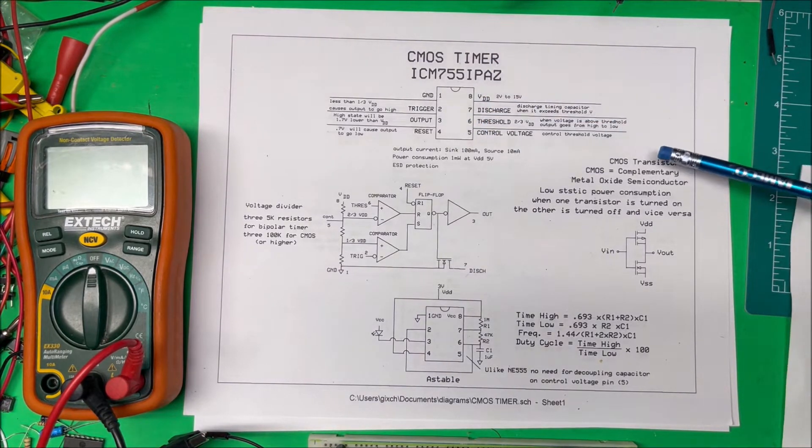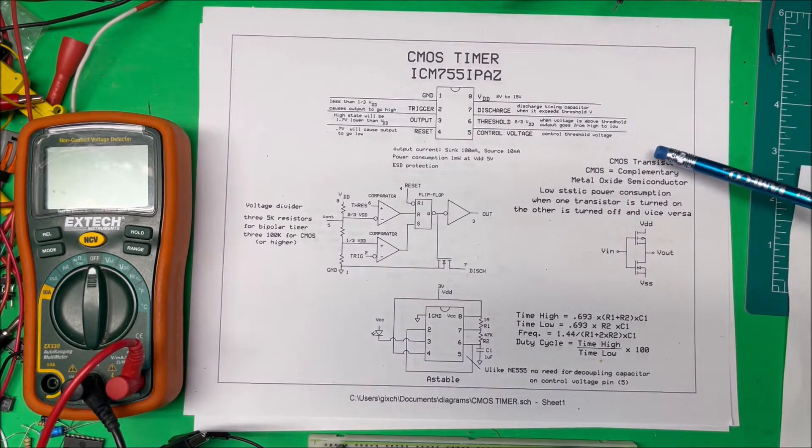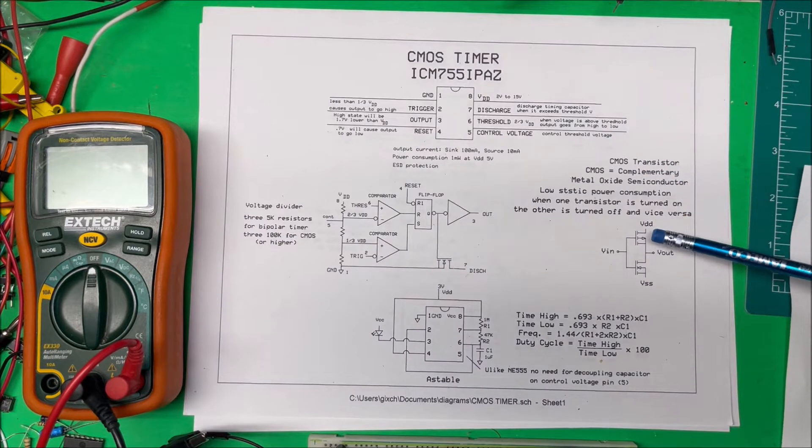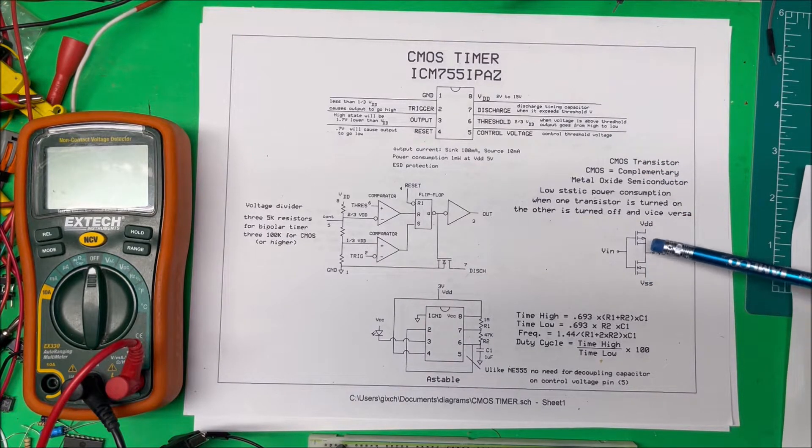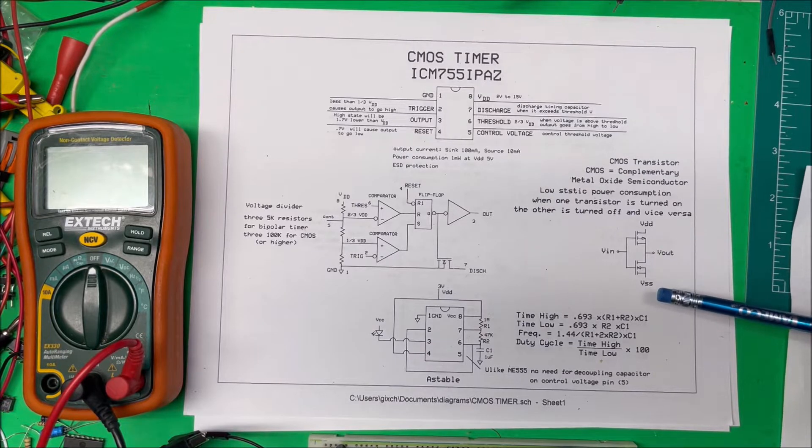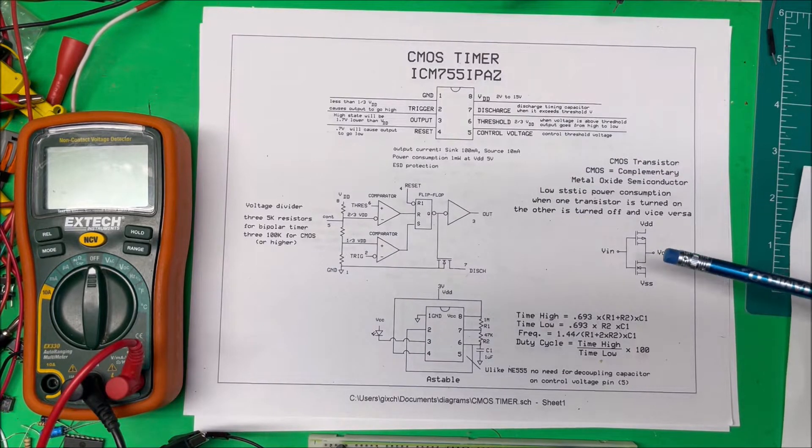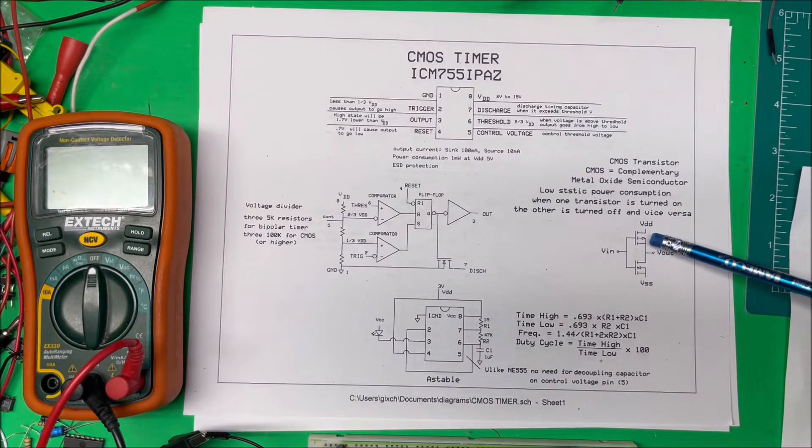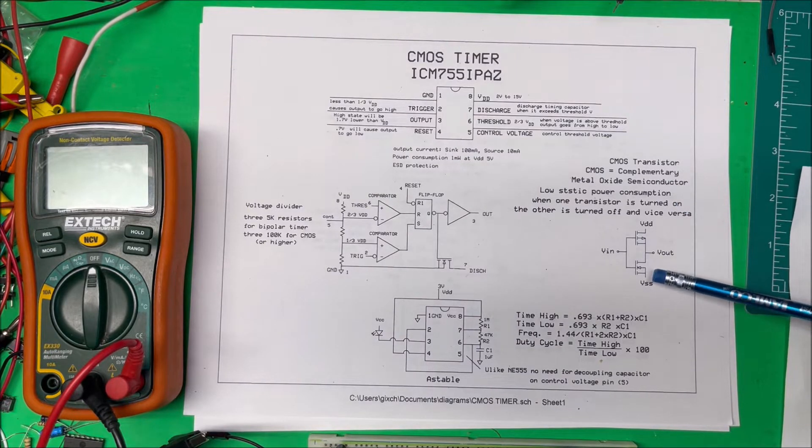So CMOS is a complementary metal oxide semiconductor. Inside there they use two transistors, an N-type and a P-type here. And they have low static consumption because when one transistor is turned on, the other one is going to be turned off and vice versa.